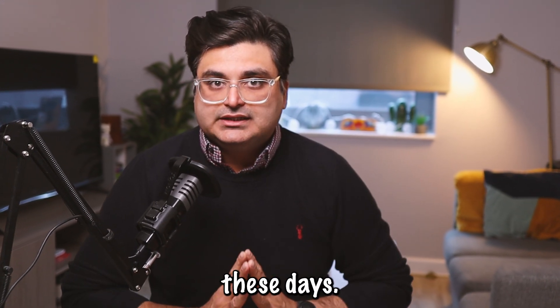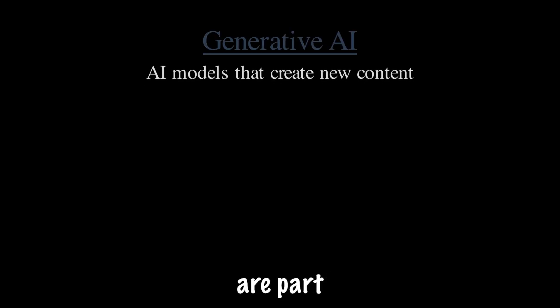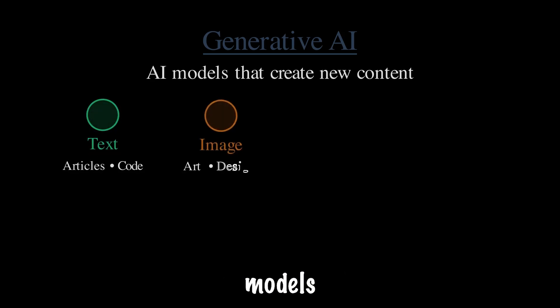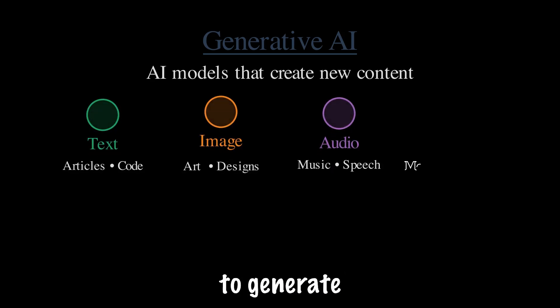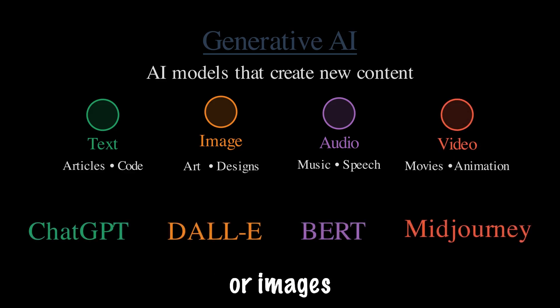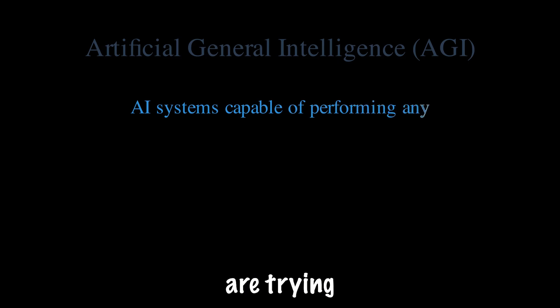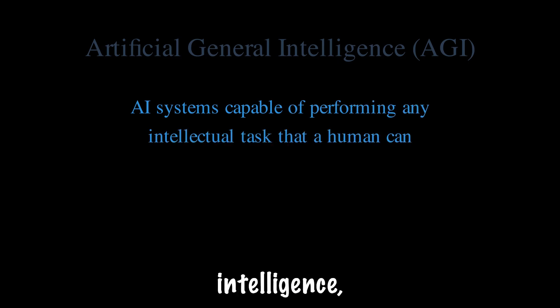The cool things we are seeing these days — for example, large language models, large vision models — are part of generative AI, in which models are able to generate new data or new instances, whether it's text, images, video, or audio. AGI is a new emerging field where we are trying to build general intelligence.